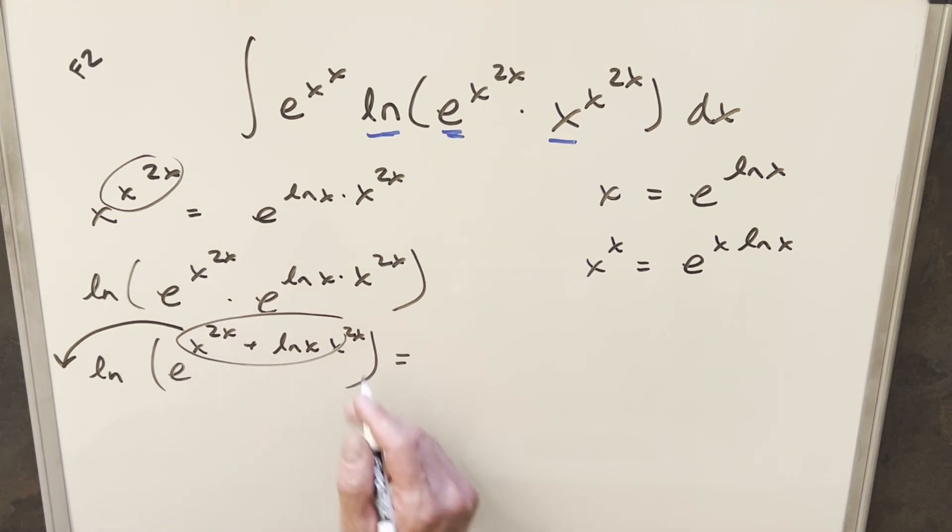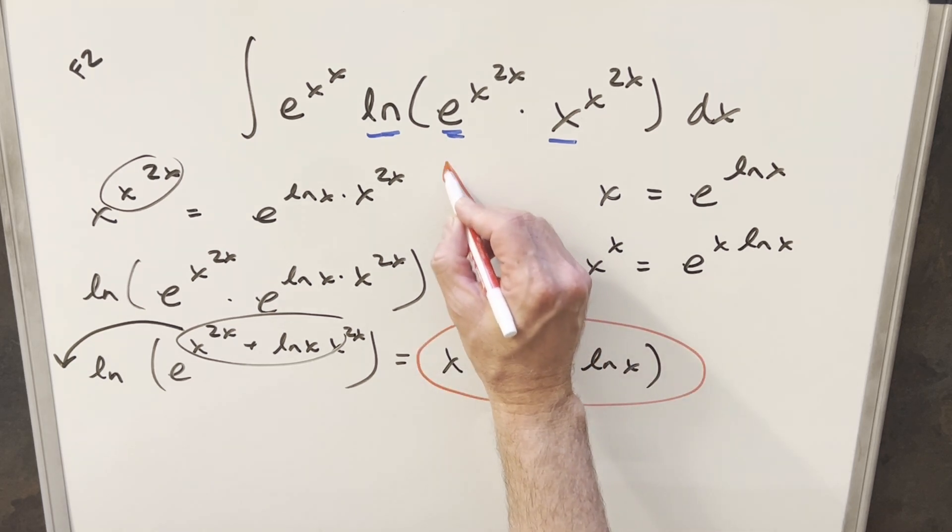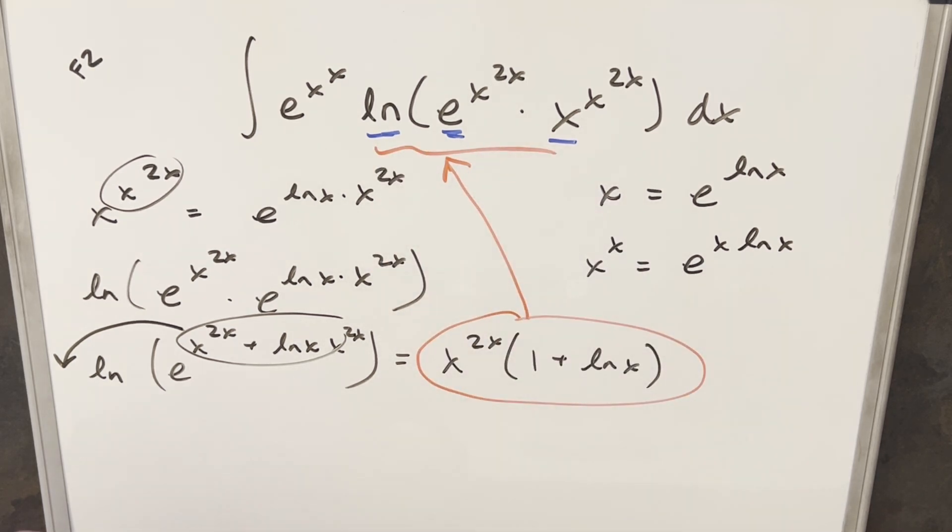So when we rewrite this, we can just bring that down, but what I can do is factor x to the 2x out, and then we can write it as x to the 2x times 1 plus natural log x. But now that we have this, we can take this, put this back into the integral where we have the natural log, and continue from there.